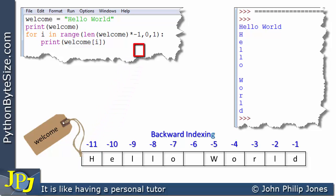When we execute this the first time we go into the loop, i will take the value of minus 11. So welcome[i] is welcome[-11], which is this one here, so that H gets displayed on the screen.